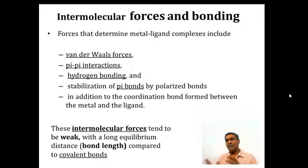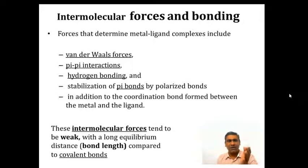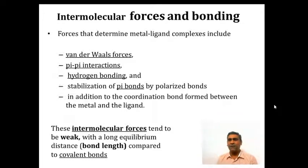Apart from the coordinate bond between metal and ligand, what are the intermolecular forces responsible in coordination polymers? There are various supramolecular interactions: van der Waals forces, pi-pi interactions, hydrogen bonding, and stabilization of pi bonds by polarized bonds, in addition to the coordination bond formed between the metal and the ligand. Though these intermolecular forces are very weak, they are strong enough to form a polymer of two-dimensional or three-dimensional structure.